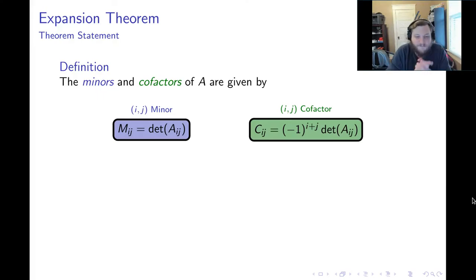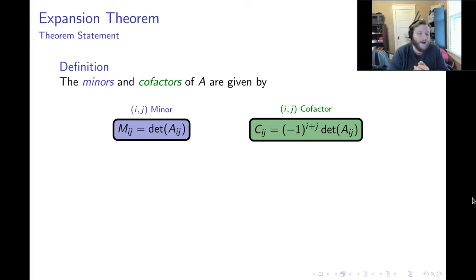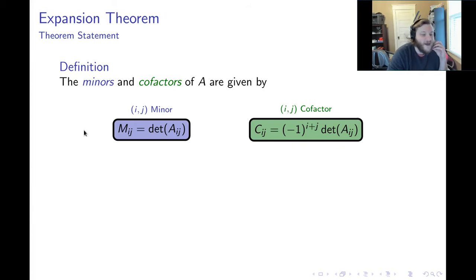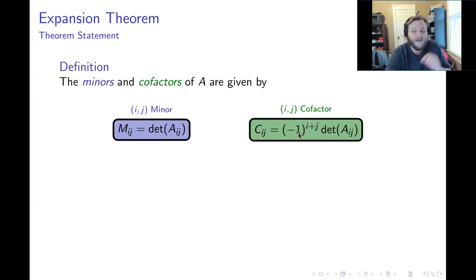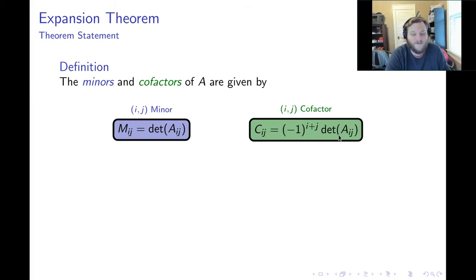It would be nice if we could make the problem of calculating determinants a little bit easier, and there are some tricks we can implement. The first thing I want to introduce is some terminology. The ij minor of a matrix is denoted m sub ij, and this is the determinant of the ij submatrix. The ij cofactor is denoted c sub ij, and this is negative 1 to the i plus j multiplied by the determinant of the ij submatrix.